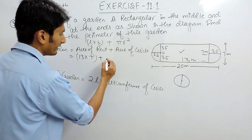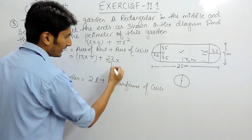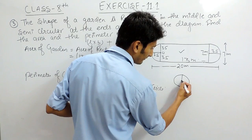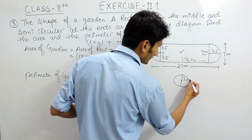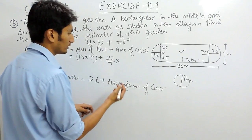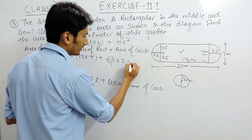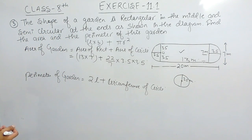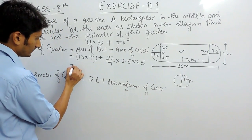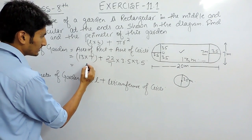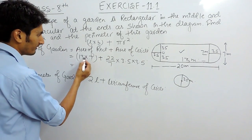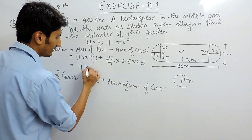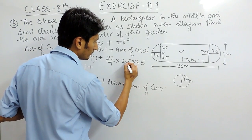We know that the value of π is 22 upon 7, and the radius is 3.5 meters. So the area of the circle is 22/7 times 3.5 squared. Now solving further: 13 times 7 equals 91, so the area of the rectangle is 91 square meters.